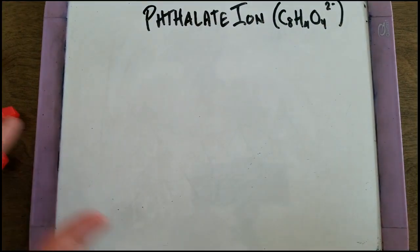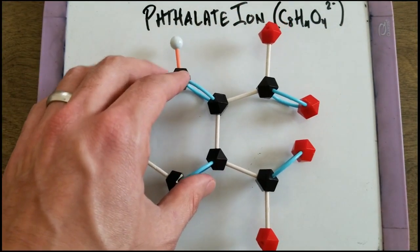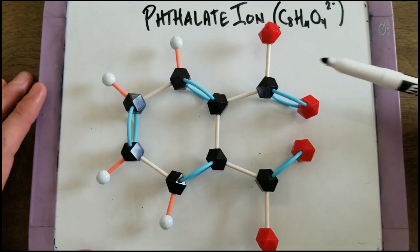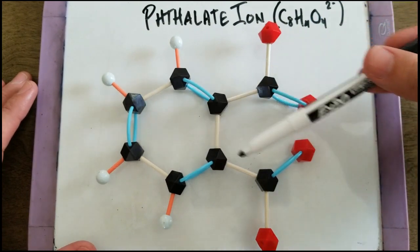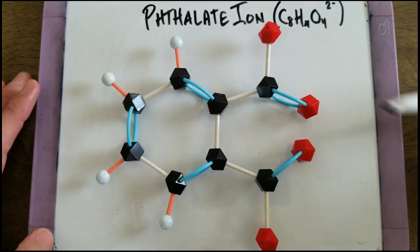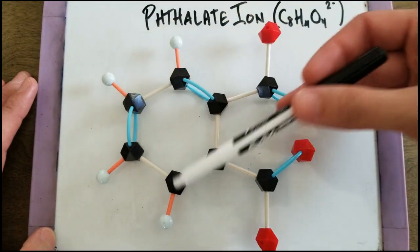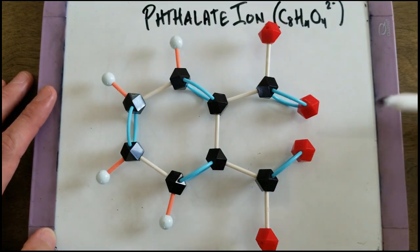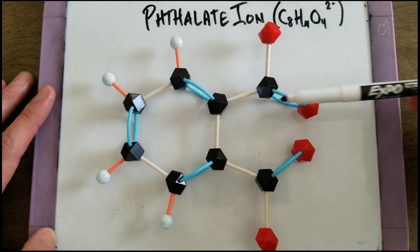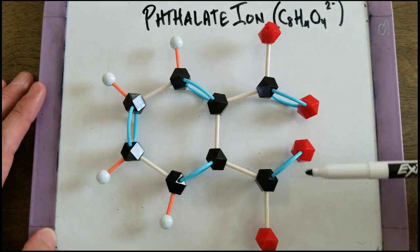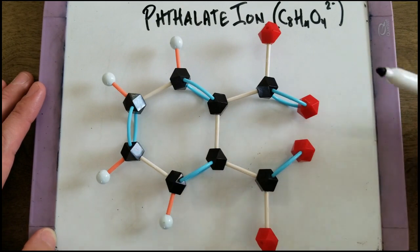So phthalate ion looks like this, where it's got eight carbons, four hydrogens, and four oxygens. The oxygens are arranged in a group coming off of a carbon, to be two carboxylate groups.